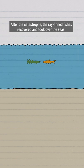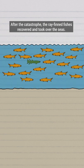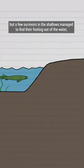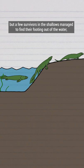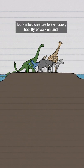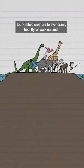After the catastrophe, the ray-finned fishes recovered and took over the seas. The lobe-fins never recovered, but a few survivors in the shallows managed to find their footing out of the water and eventually gave rise to every back-boned, four-limbed creature to ever crawl, hop, fly, or walk on land.